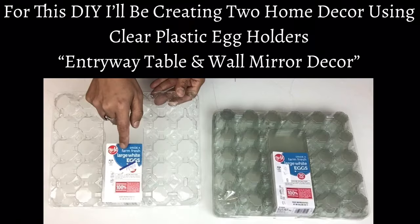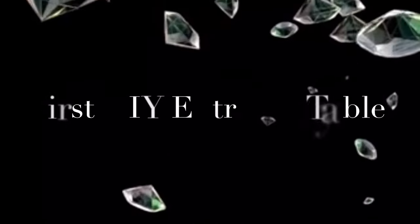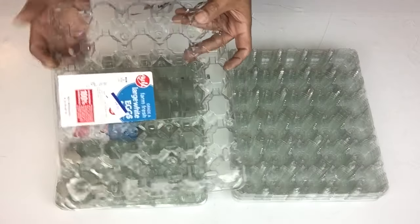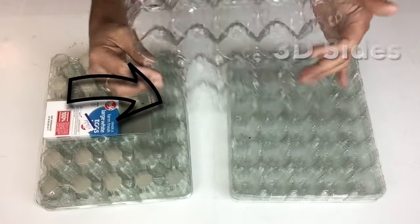For this DIY I'll be creating two home decor using clear plastic egg holders: an entryway table and a wall mirror decor. If you would like to find out what I created just continue watching. The first DIY I'll be creating the entryway table and I'll start by using clear plastic egg holders, the ones without the label and a 3D pattern side, and I'll be using six in total.